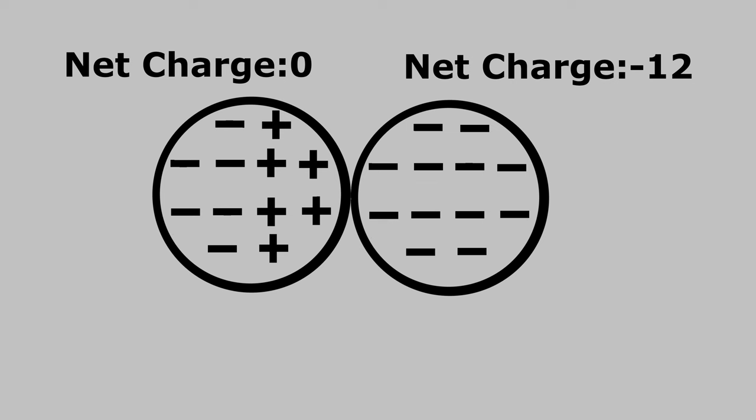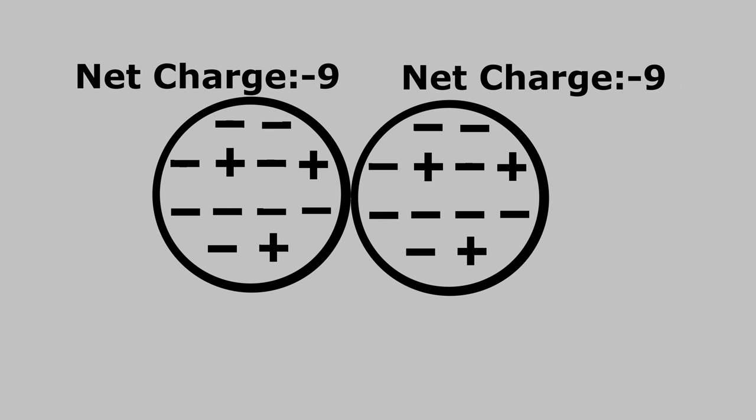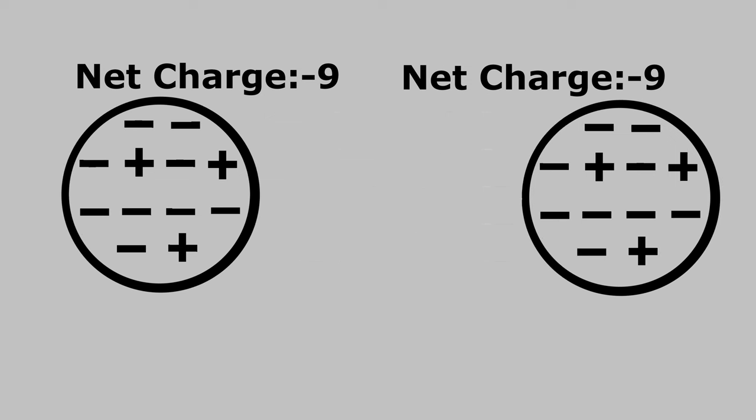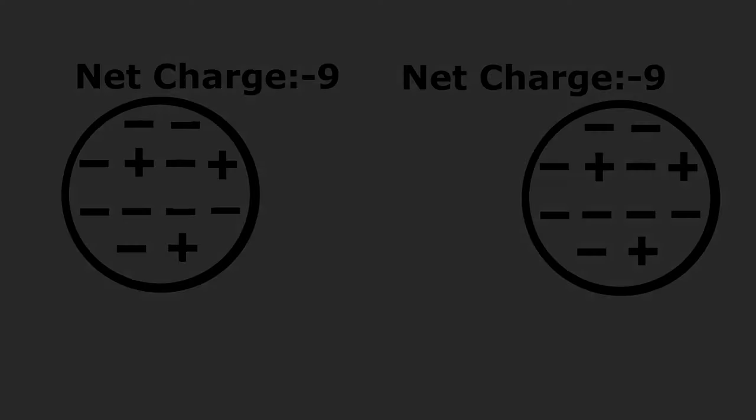Once the two objects touch, they instantly transfer charges. So my once-neutral object is no longer neutral — it now has a net negative charge, and the two objects repel. If I discharge the object and bring it back to neutral, the entire process starts over. The Van de Graaff is plugged into the wall and constantly adding negative charges to its surface, which is why we see the motion repeat over and over again.